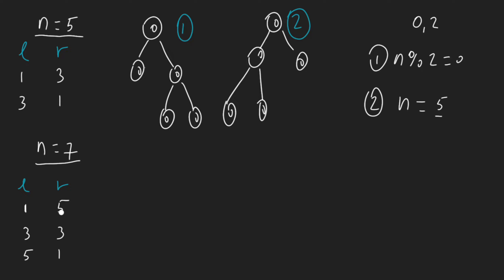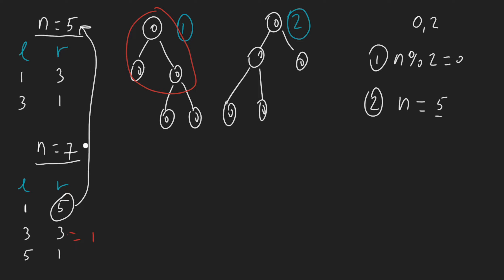Now let's look at the subproblems. When n equals three, there is only one possible full binary tree. When the left is one and the right is five, n equals five has two possibilities. Similarly, when the left is five and the right is one, we again get two possibilities. So two plus one plus two gives us five total possibilities when n equals seven.